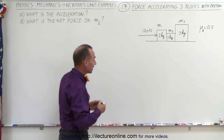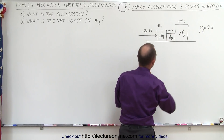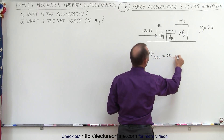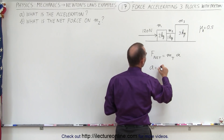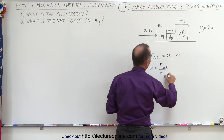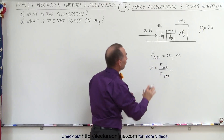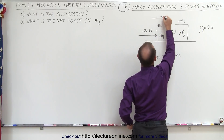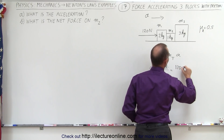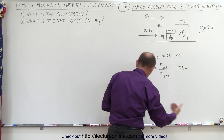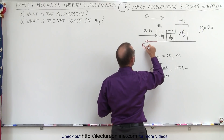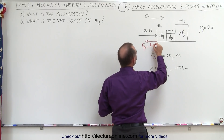First let's find the acceleration by taking this as a whole system. We're going to find F_net equal to the total mass of the system times acceleration, or acceleration equals the net force divided by the total mass. The net force is going to be the force that aids acceleration — we assume acceleration is in this direction, so the aiding force is 120 Newtons minus the friction force, which pushes in the opposite direction.